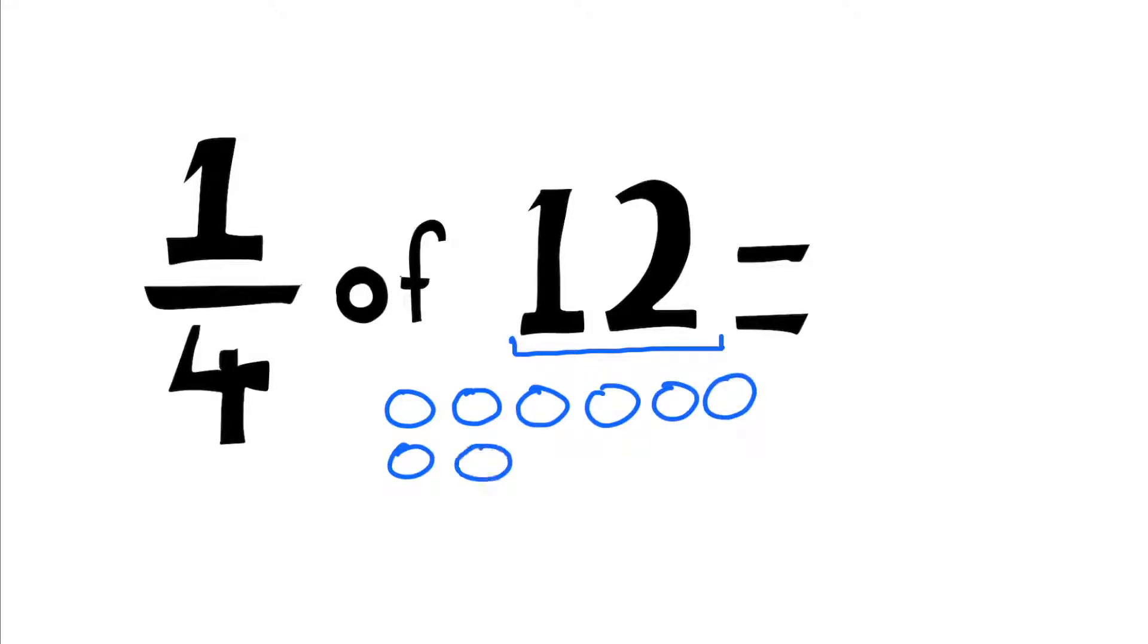Here's 12 little blue great things. For every four of them, I'm going to turn one of them red. So for every four, one of them is going to be red. Three, four. One, two, three, four. Therefore, you can see there are three red. So a quarter of 12 is three.